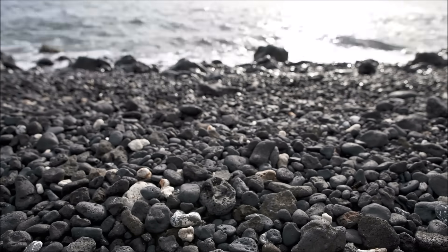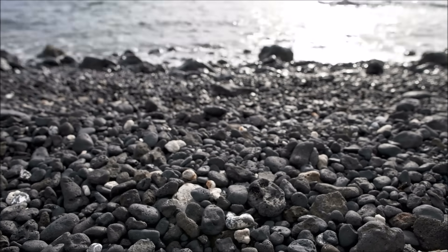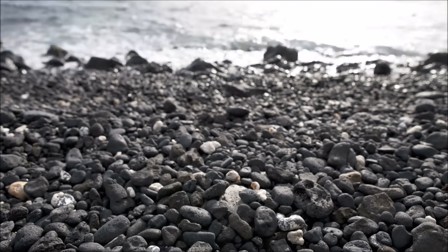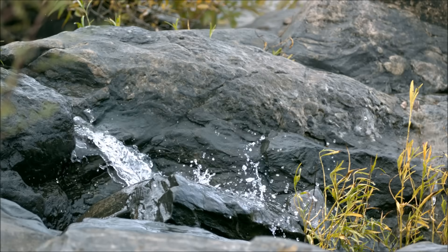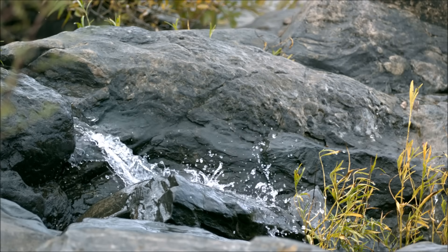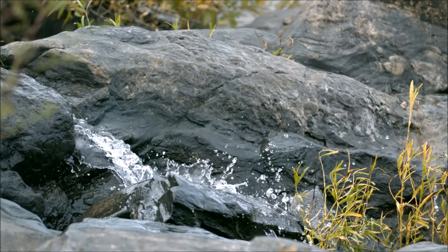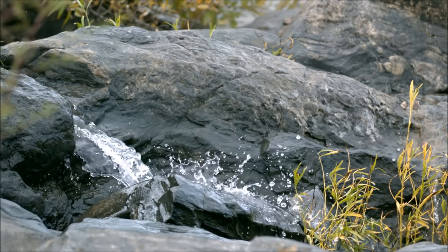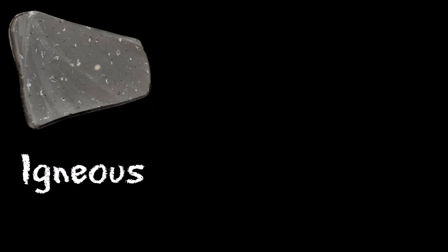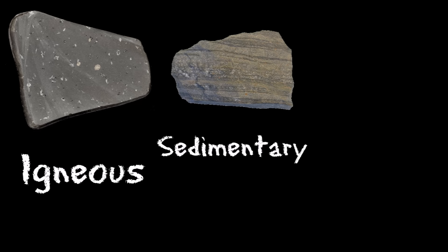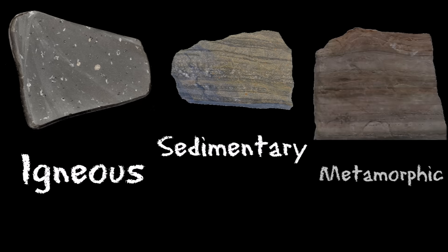But rocks in some shape or form can be found all over the planet. Different types of rocks are formed in different ways. There are three main types of rock: igneous, sedimentary, and metamorphic.